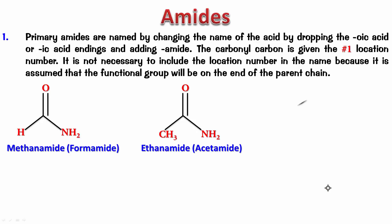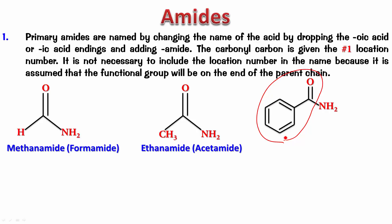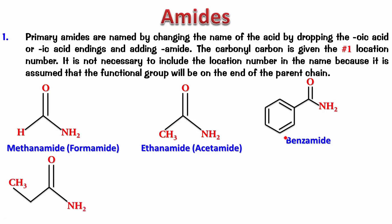Try this one. From which acid has this come? It has come from this acid — benzoic acid. So this is going to be called benzamide. What is the name of the next one? It is a 3-carbon acid, propanoic acid, so the amide is propanamide.